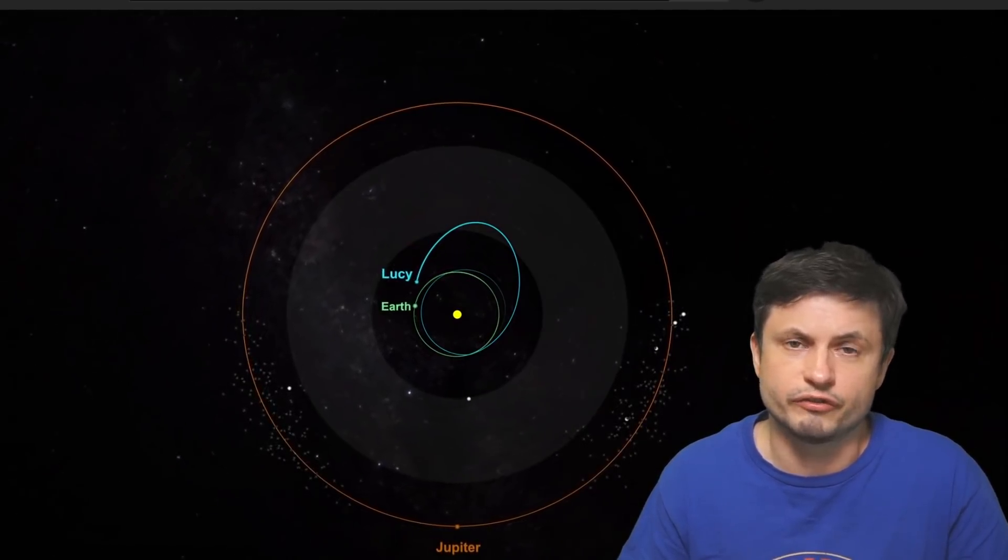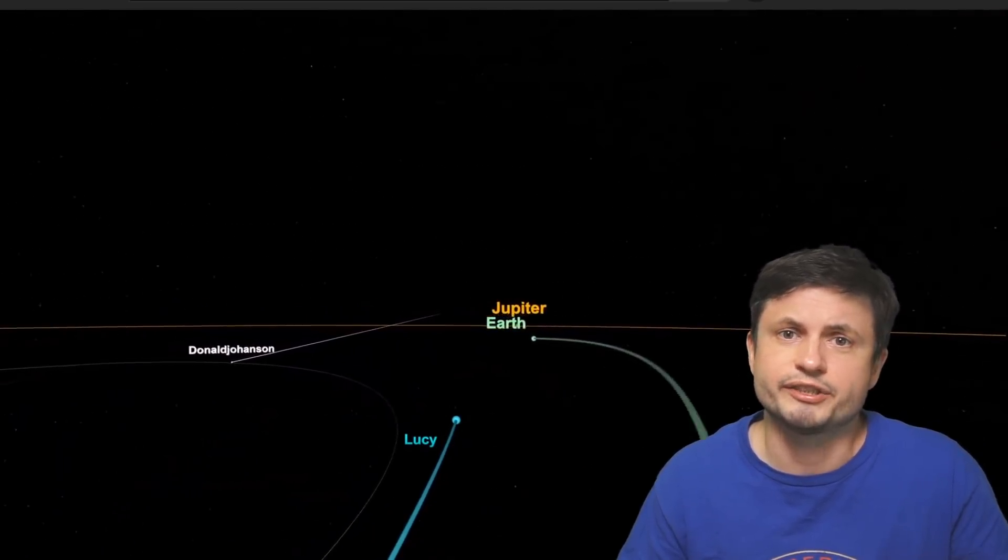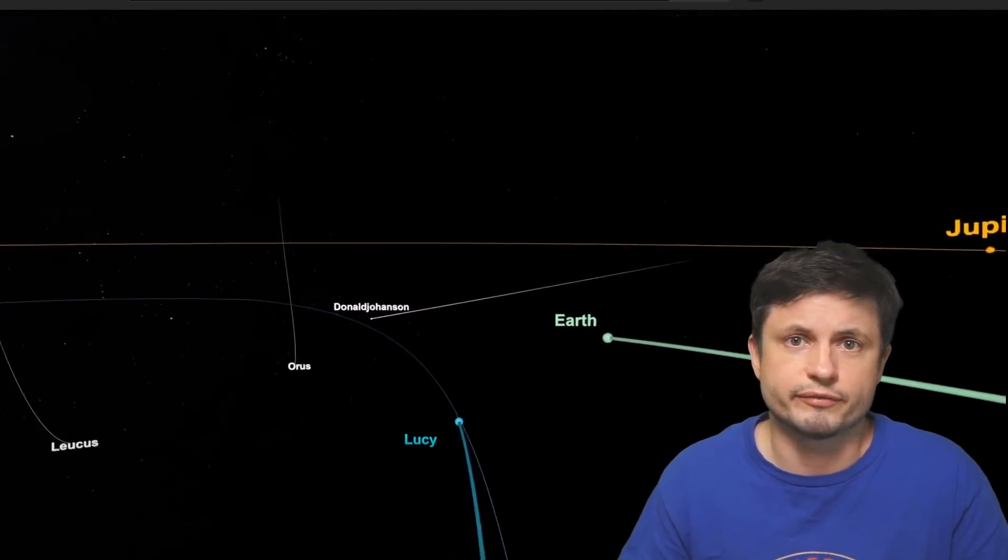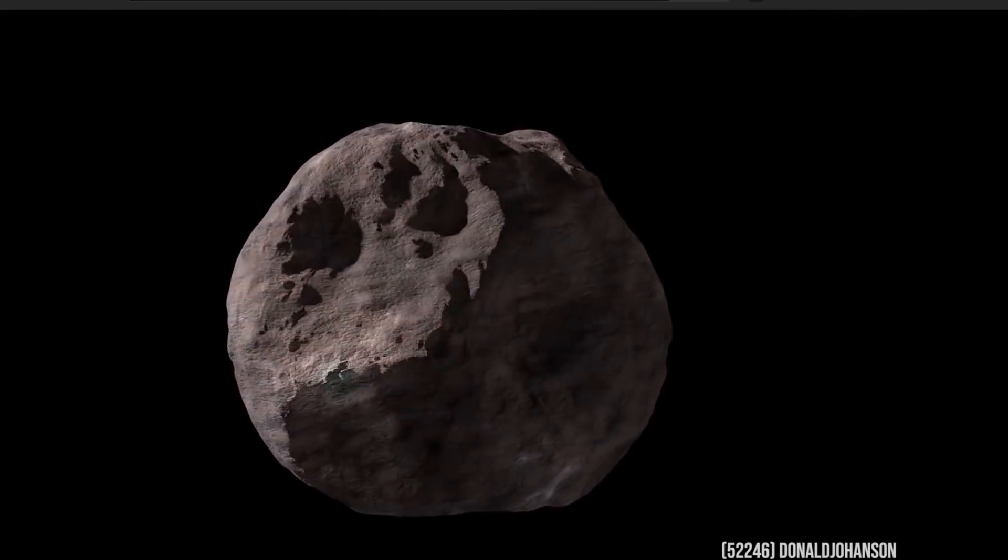But because of the complexity of the maneuvers, it's not going to be visiting its first target, the asteroid known as Donald Johansson, until 2025. And so in 2025, it's going to do a very quick flyby, hopefully take some pictures, collect some data, and then it's going to go to the next target.